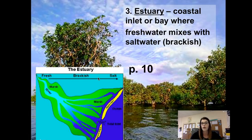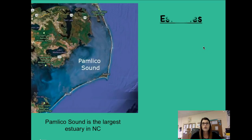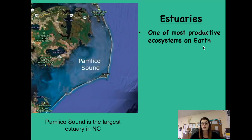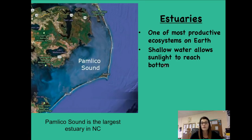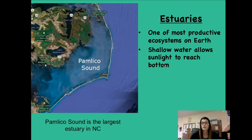An estuary is an example of a type of wetland. Estuaries are really important for many reasons. One key reason is that they are one of the most productive ecosystems on Earth, because fresh water from rivers brings nutrients from land and mixes with ocean salt water, allowing many different plants and organisms to live. Estuaries are also really shallow — here in North Carolina, a coastal state with many estuaries, the shallow water allows sunlight to penetrate all the way to the bottom, enabling photosynthesis and supporting lots of plant growth and great biodiversity.